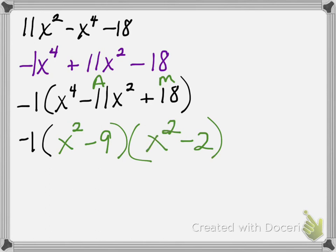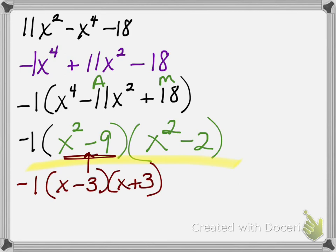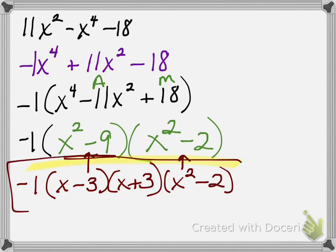So this is going to be x squared minus 9 and x squared minus 2. Before I say that's my final answer, are either one the difference of two squares? The first factor, x squared minus 9, is a difference and 9 is a perfect square, so it can be factored more into x minus 3 times x plus 3. The last factor, x squared minus 2, is a difference but 2 is not a perfect square, so it stays as x squared minus 2. That is my final answer, factored completely.